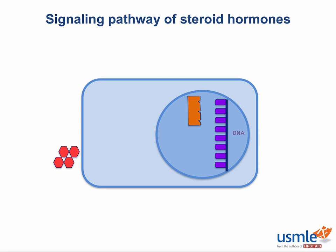Thankfully, a group of blood proteins called binding globulins are here to pick up the slack. They're kind of neat in that they've got enough external polar residues to be water-soluble, but enough non-polar pockets to serve as a nice safe haven for steroid hormones.